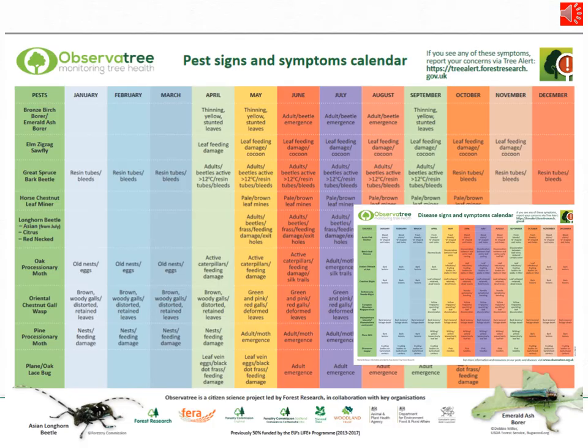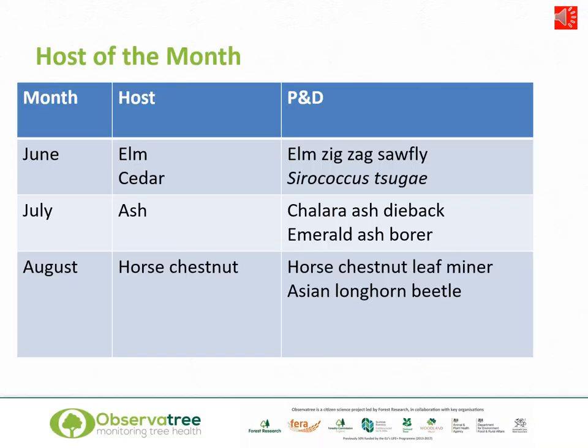On the Observatory website there's also the pests and disease signs and symptoms calendars. It has all the different priority pests and pathogens and looks at when you might be expected to find them across the different months. Again, you can download this for free. As we move towards summer, we're going to be thinking about the different hosts that we'd encourage you to look at in June, July and August.